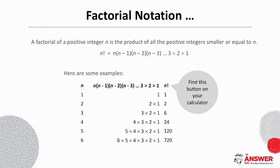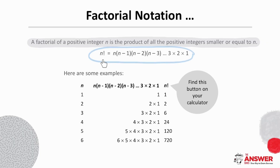Let's have a more formal look at factorial notation. The factorial of a positive integer n is the product of all the positive integers smaller than or equal to n. Written out in general form, we can see this applied with five factorial: five times (five minus one), which is four, then (five minus two), which is three, then (five minus three), which is two, then (five minus four), which is one. The best news is there is a factorial button on the calculator, so you don't have to work these out in your head. Maybe pause the video to find this button on your calculator and test it out.